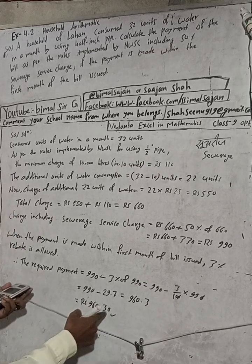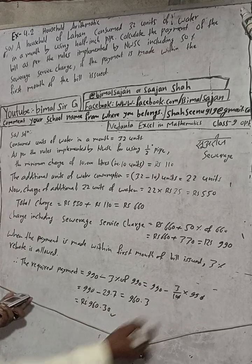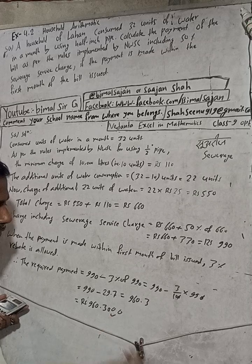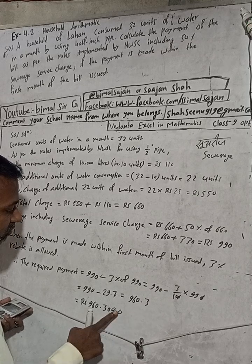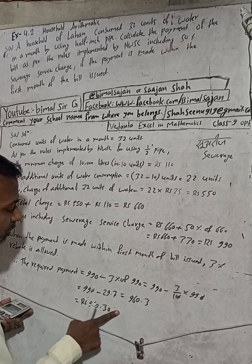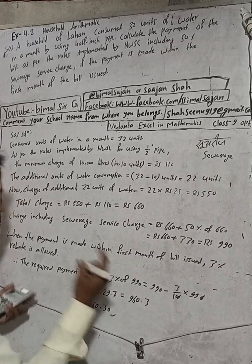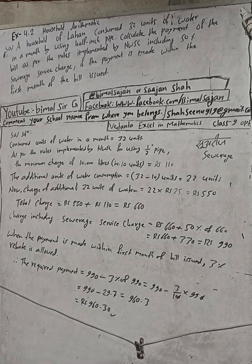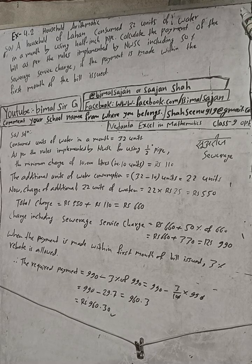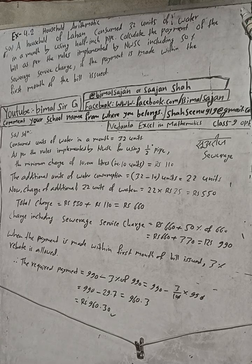Because after the decimal point, 0.3 means 30 paisa. So 960.3, that is rupees 960 and 30 paisa. The book answer is correct and this is the required solution. If you find this video useful, please share with your friends.